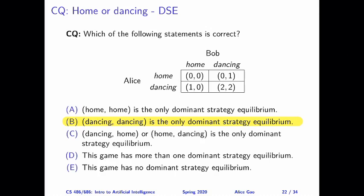So we're considering the homework dancing game. And this question asks you which one of the outcomes is a dominant strategy equilibrium? Or is there even a dominant strategy equilibrium of this game? The correct answer is that dancing dancing is the only dominant strategy equilibrium. Let's take a look why.